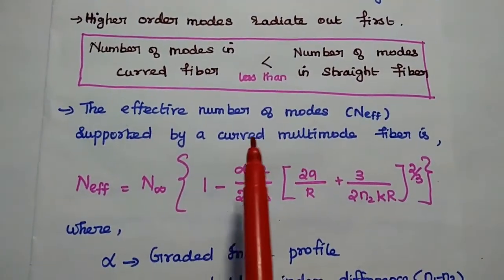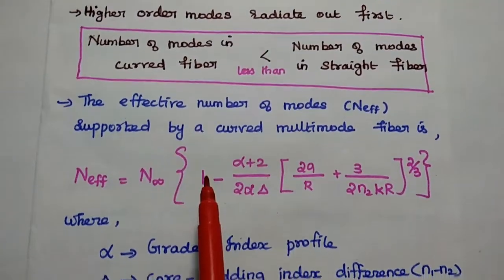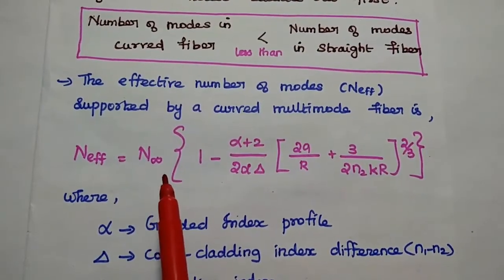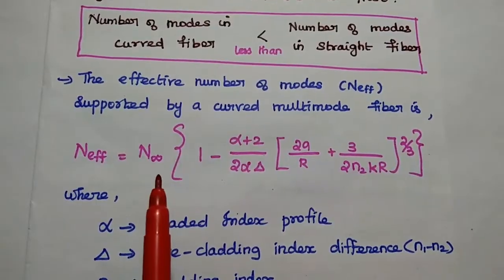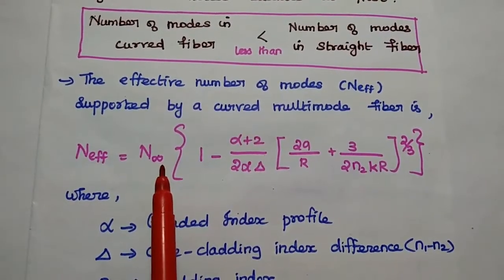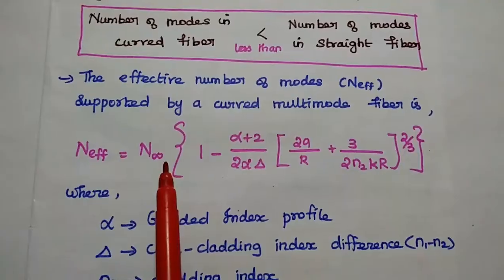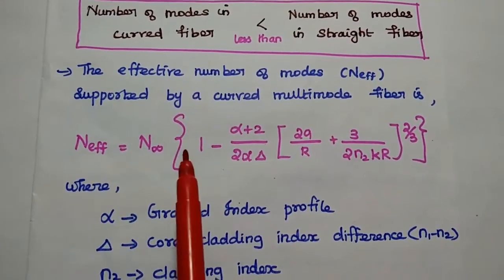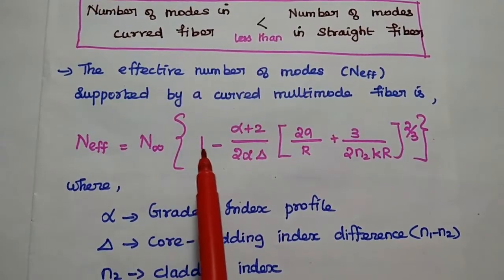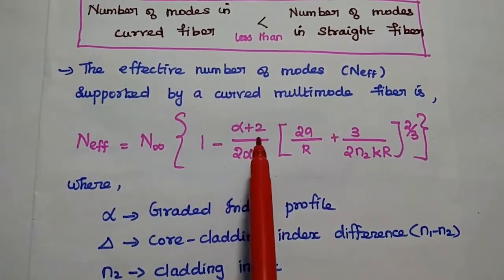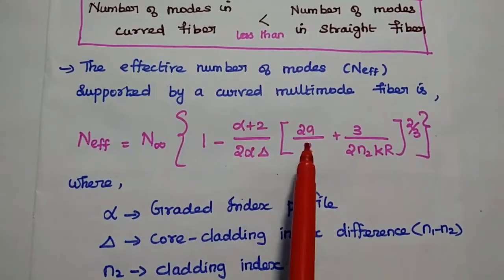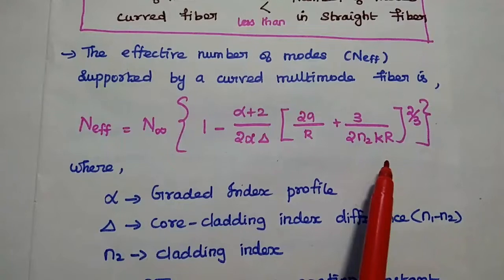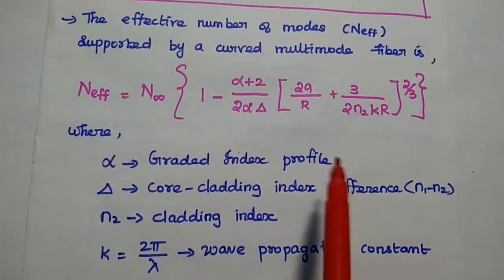Next, we are going to find out the effective number of modes supported by this curved multi-mode fiber that is equal to N infinity. This N infinity is nothing but the total number of modes in a straight fiber. This is the effective number of modes in a curved fiber. That is equal to N infinity into 1 minus alpha plus 2 by 2 alpha del into 2A by capital R plus 3 by 2N2K into R the whole power 2 by 3.